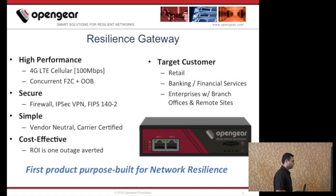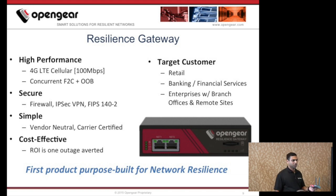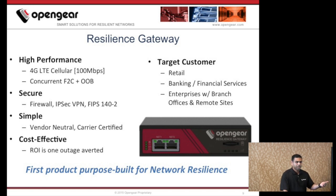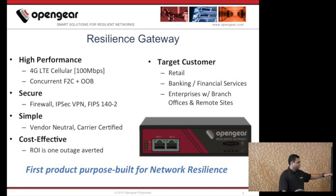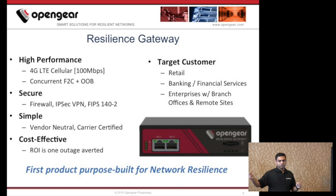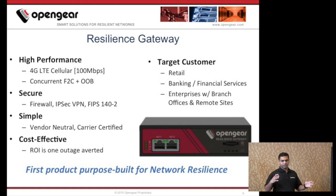To give you a quick overview of the product's features and target customers: this is a real high-performance device, designed to work with 4G LTE networks. Today the maximum bandwidth with 4G LTE is around 100 Mbps; a couple of years from now with LTE Advanced you'll get 300 Mbps. In addition to out-of-band management traffic, it will easily handle concurrent failover traffic. It's a secure product with an inbuilt firewall and an OpenVPN client. You can use IPsec VPN to connect this device at a remote site back to your data center over a WAN network, handling all traffic encryption. It is FIPS 140 certified for military-grade and government applications.